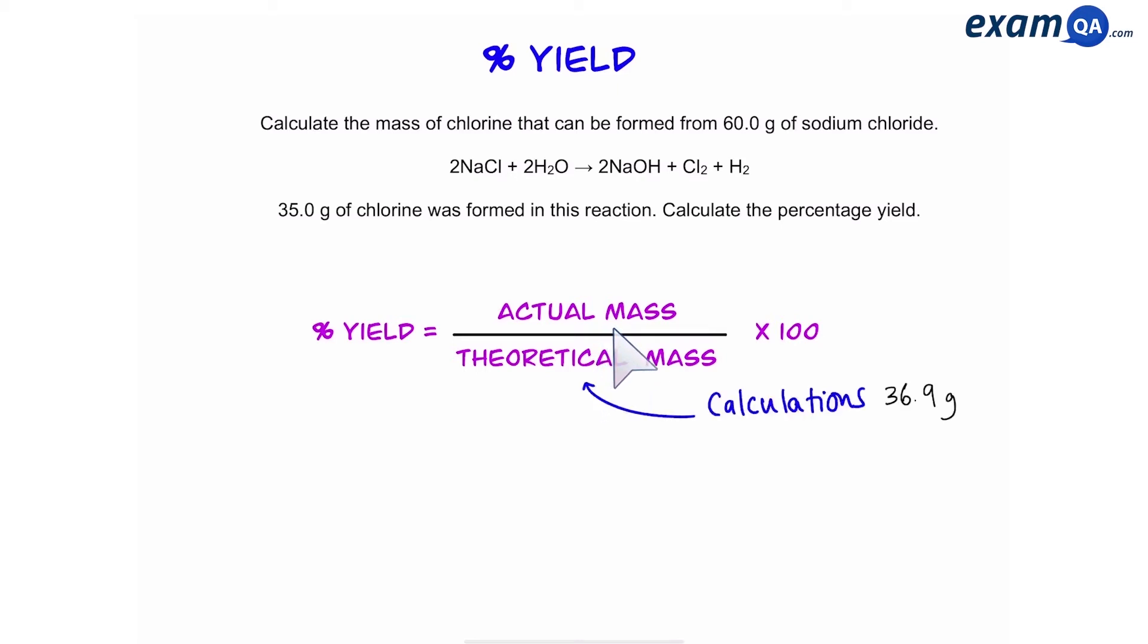Now, theoretical mass is the mass that we get by doing our molar calculations. So we got 36.9 in the previous part. And the actual mass is what you get in real life by doing the experiment. A clue: actual mass will always be smaller than theoretical mass. So we're always going to do a big number at the bottom and the small number at the top.